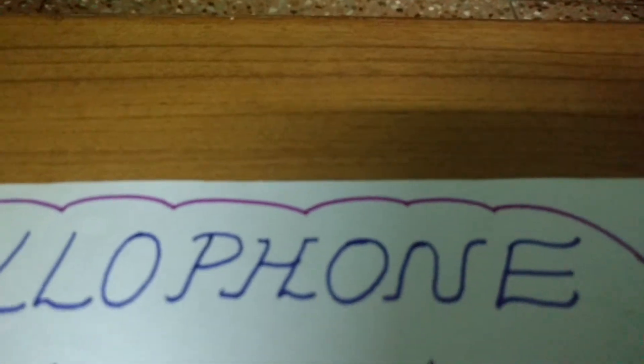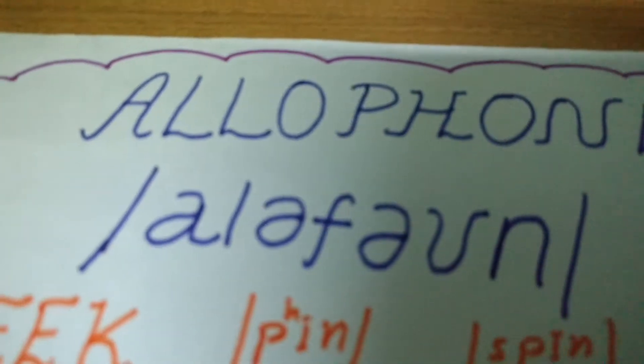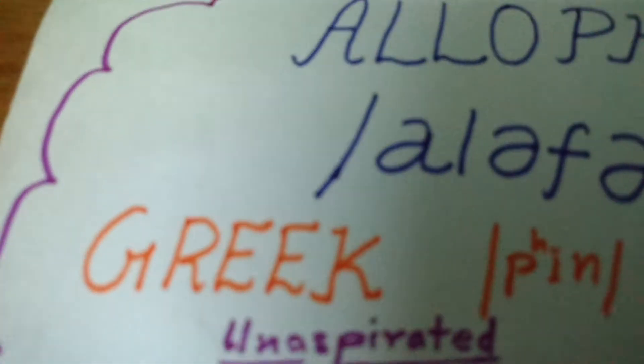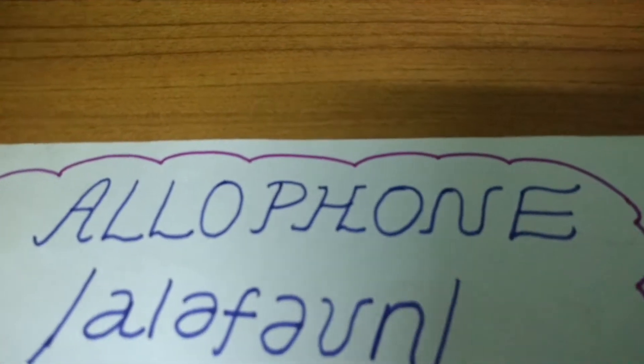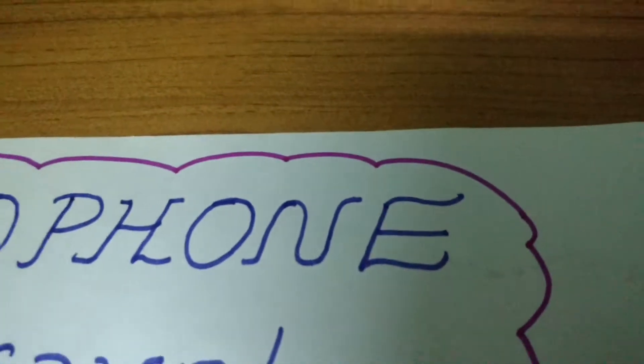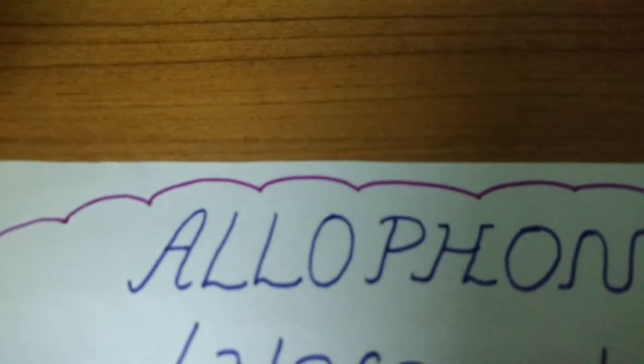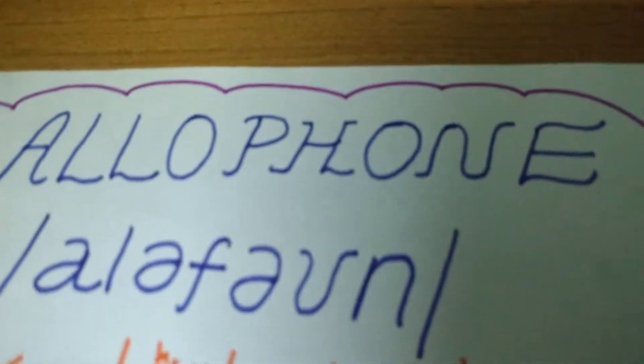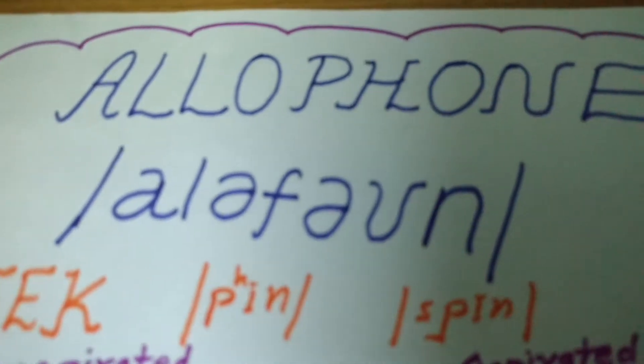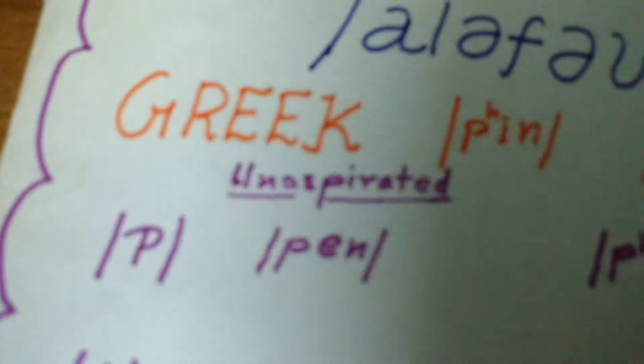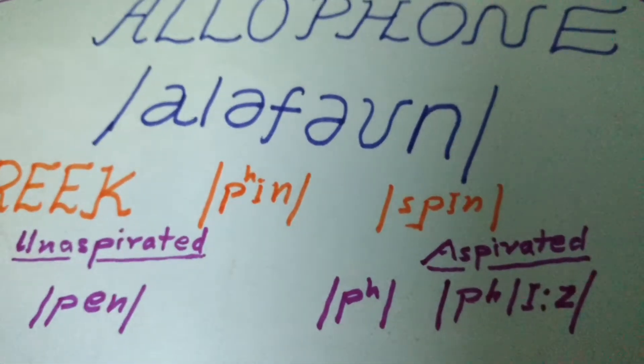Now let us discuss a similar concept in the study of sound — the allophone. The term 'allo' again comes from Greek origin meaning 'other form in sound.' When the same phoneme is produced with different variations — meaning another sound for the same one — those variations are allophones. For example, the unaspirated and aspirated variations of certain unvoiced sounds such as /p/, /t/, and /k/. Let us see some examples.